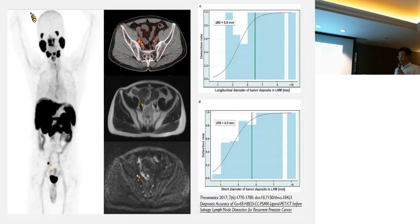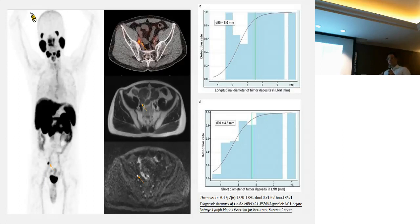This next case is also from our cohort. You can see there's a hot spot on the right iliac region. When you compare to the T2 MRI image and diffusion-weighted image, you can see the lymph node size is only 4 millimeters, even with such a hot spot. From prior published data that Dr. Moon also showed, the detection rate is around 90% when the lymph node short-axis diameter is 4.5 millimeters — still better than conventional size criteria of 8 or 10 millimeters.